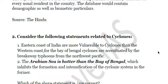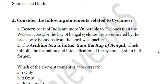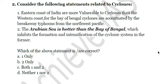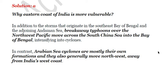Question two: consider the following statements about cyclones. First, the eastern coast of India is more vulnerable to cyclones than the western coast, as Bay of Bengal cyclones are accentuated by breakaway typhoons from the northwest Pacific. Second, the Arabian Sea is hotter than the Bay of Bengal, which inhibits cyclone formation in the former. Which is correct? Only the first statement is correct — the answer is A. If a water body is hotter it enables cyclone formation, so the second statement cannot be correct.